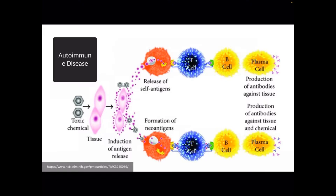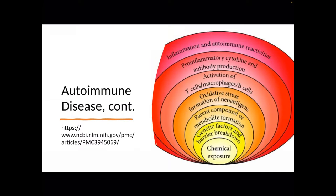Let's look at autoimmune disease and how that happens. A toxic chemical — now toxic metal — gets into the tissue, induces an antigen release, and eventually you get the production of antibodies against that tissue. When you have an exaggerated antibody response, which is going to happen when you have chronic toxic metal inhabiting your body, it's going to continue this cascade on and on, creating a production of antibodies towards the tissue. Eventually you lose the knowledge of self, and when there's no knowledge of self, any one of the 84 autoimmune diseases can express itself.